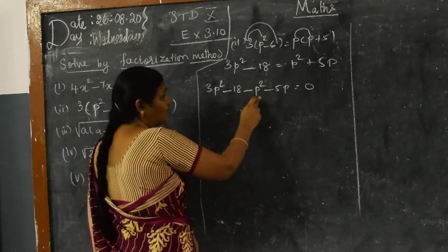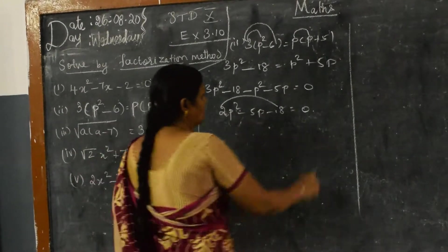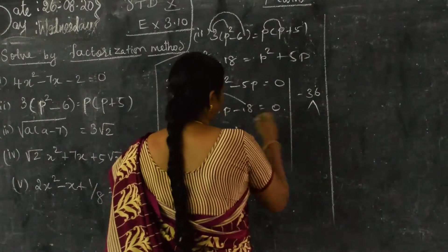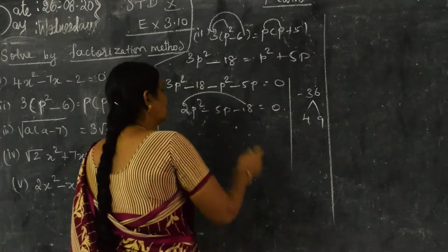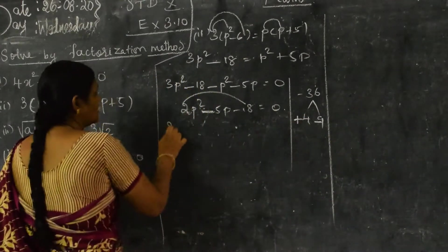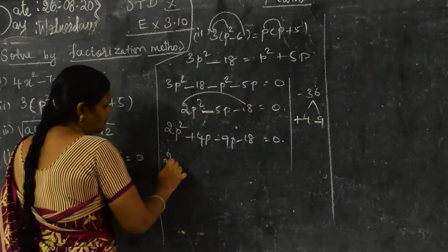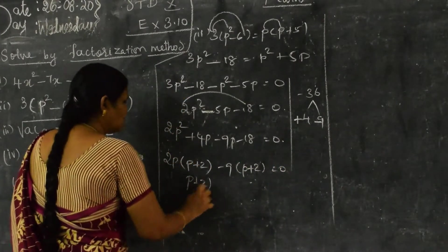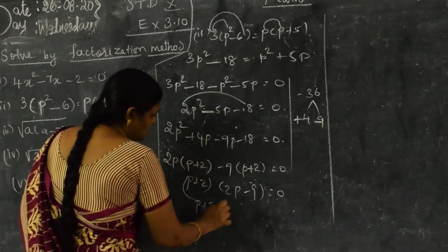So 3p² - p² gives 2p² - 5p - 18 = 0. Using the rainbow model, multiply 2 and 18 to get 36. You need to split -5 into two numbers whose product is -36. That gives -9 and +4. So you write: 2p² + 4p - 9p - 18 = 0. Taking 2p common: 2p(p + 2), and -9 common: -9(p + 2). Taking (p + 2) common gives (p + 2)(2p - 9) = 0.